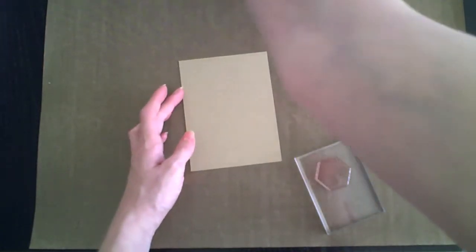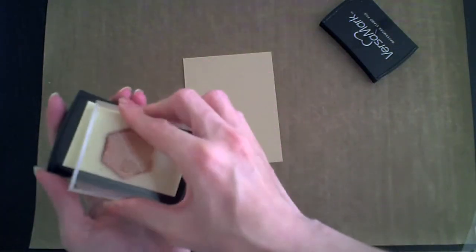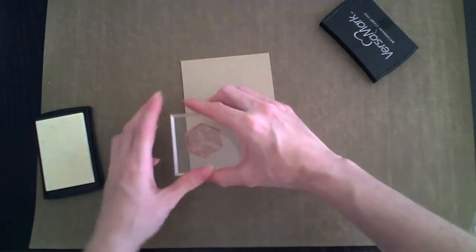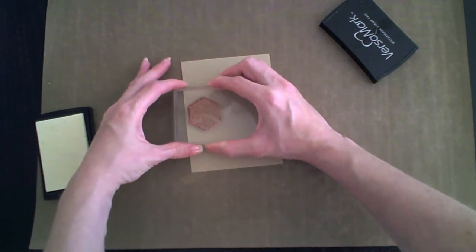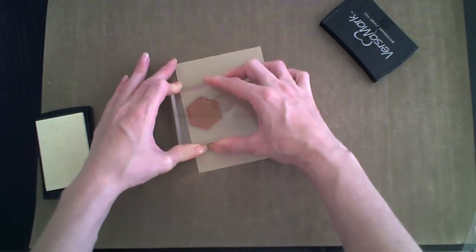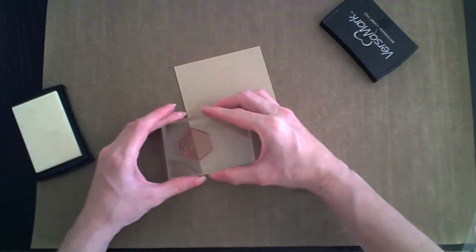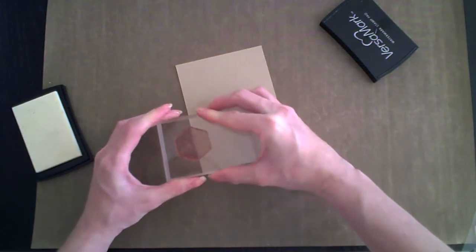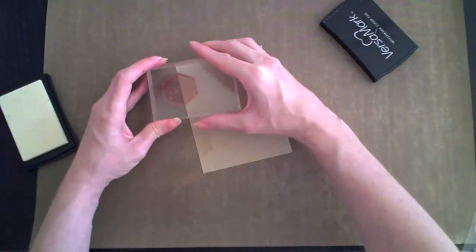And then I'm going to use Versamark ink, which is a clear and sticky ink. You can see that my ink pad is very dirty, but it doesn't matter. And I'm starting at kind of halfway lengthwise and close to the left edge. And then I try to align it as best I can up and down. And I will also add some underneath the first one. Underneath and to the right.